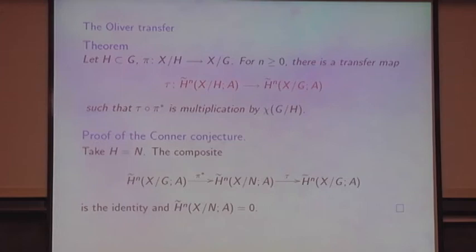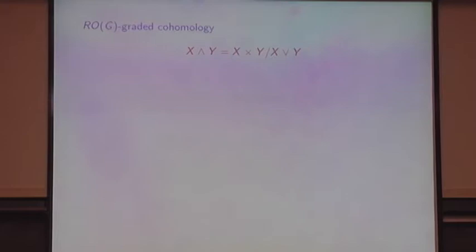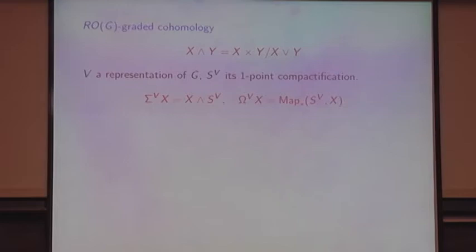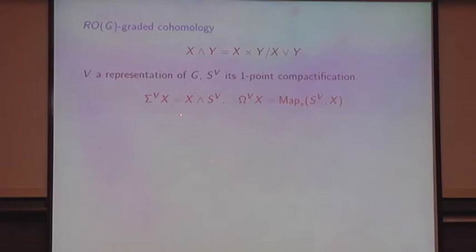This is going to lead us directly into thinking about grading cohomology on ROG. The SMASH product is the based version of Cartesian products; the wedge is the one-point union. You have based G-spaces, with G acting trivially on the base point, and the wedge is obtained by identifying the base points of X and Y. You take the quotient — that's the SMASH product. If V is a representation of G, I'll think of V as having an inner product with G acting by isometries. Let the sphere S^V be the one-point compactification of the representation. You have a suspension functor based on this representation sphere and an adjoint loop functor.